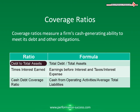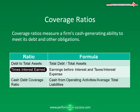The next coverage ratio is times interest earned. This is earnings before interest and taxes divided by interest expense. It is a metric used to measure a company's ability to meet its debt obligations, calculated by taking EBIT and dividing it by total interest payable on bonds and other contractual debt. It is usually quoted as a ratio and indicates how many times a company can cover its interest charges on a pre-tax basis.